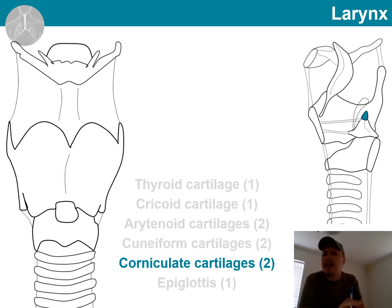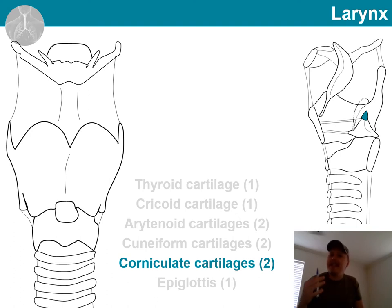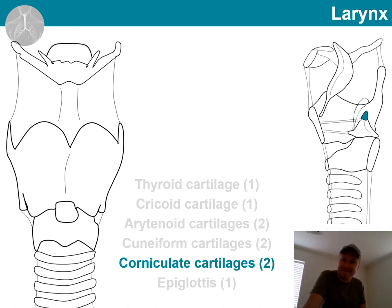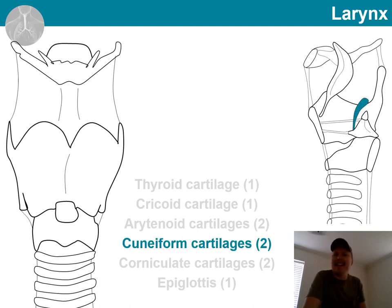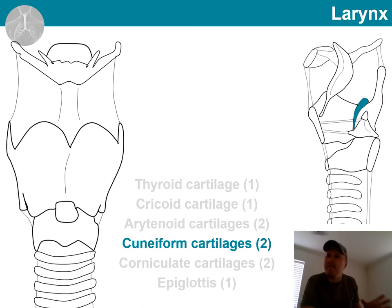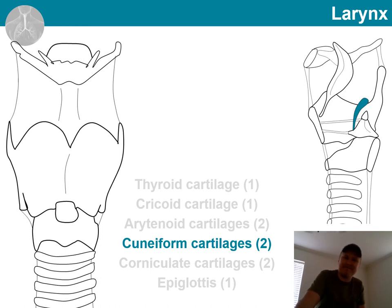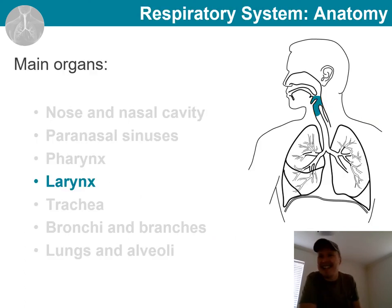Let's look at the corniculates — two of those, both on top of each of our arytenoids. You can consider those as little tiny tips on top of them. And finally, the cuneiforms are actually located within the mucous membrane lining, so normally they are not visible. Those are our cartilage parts of the larynx.